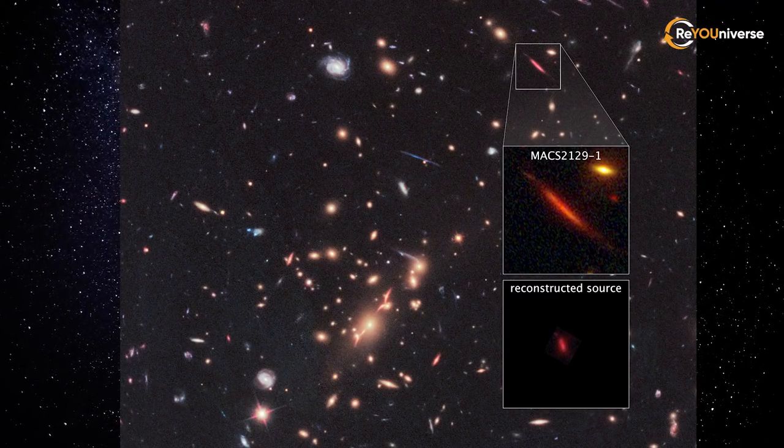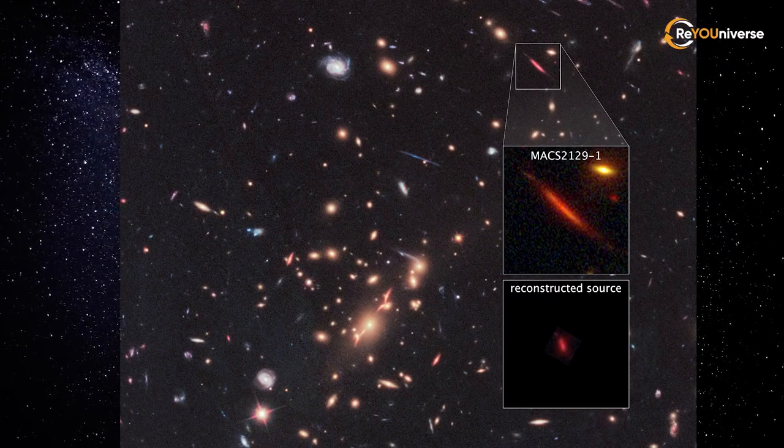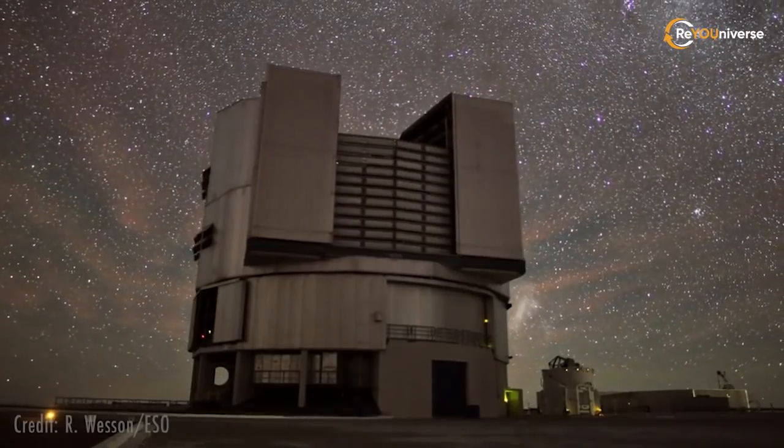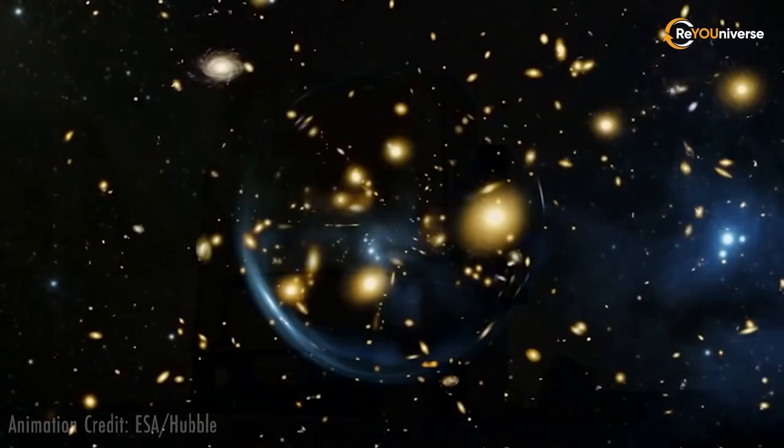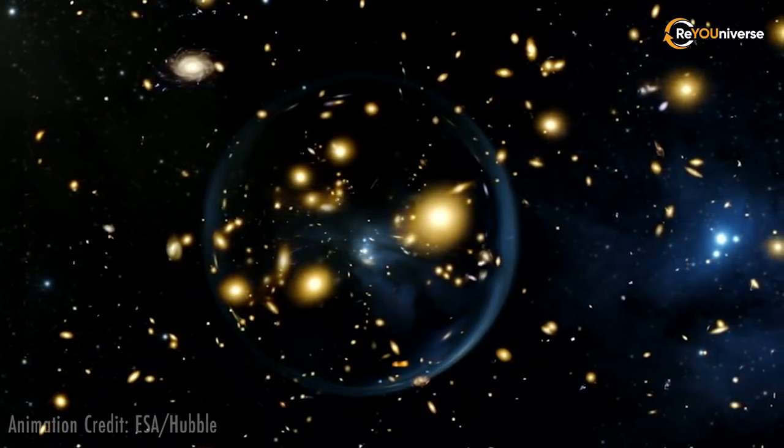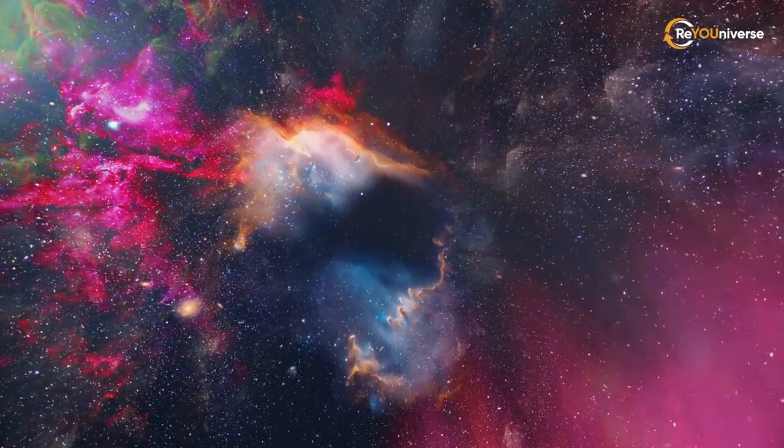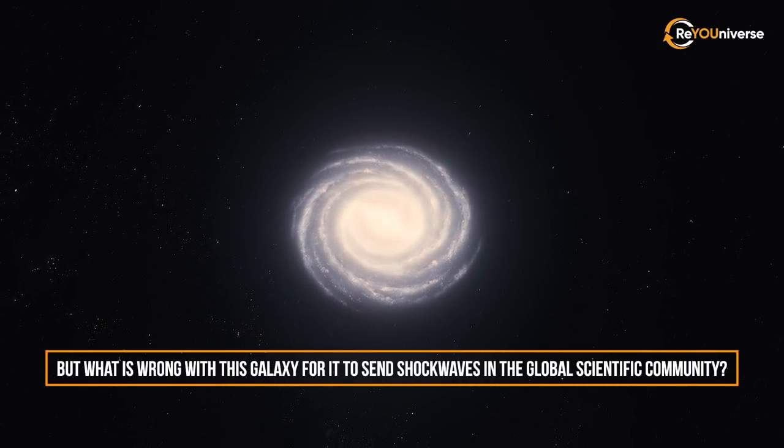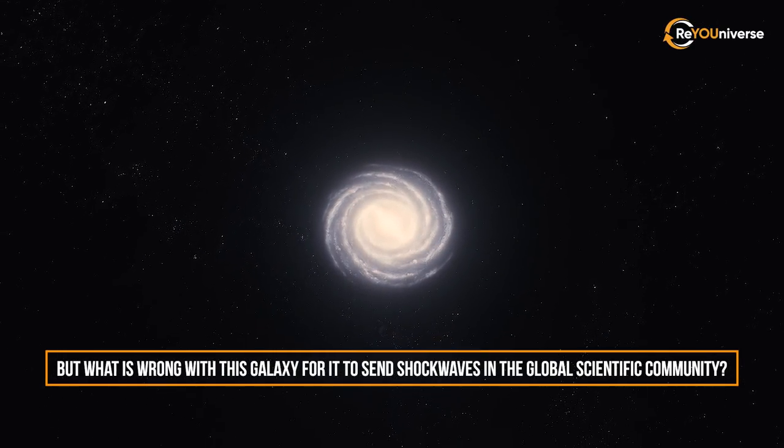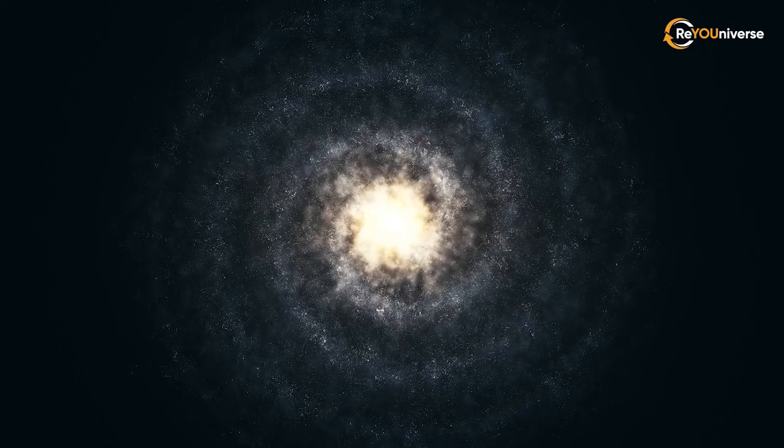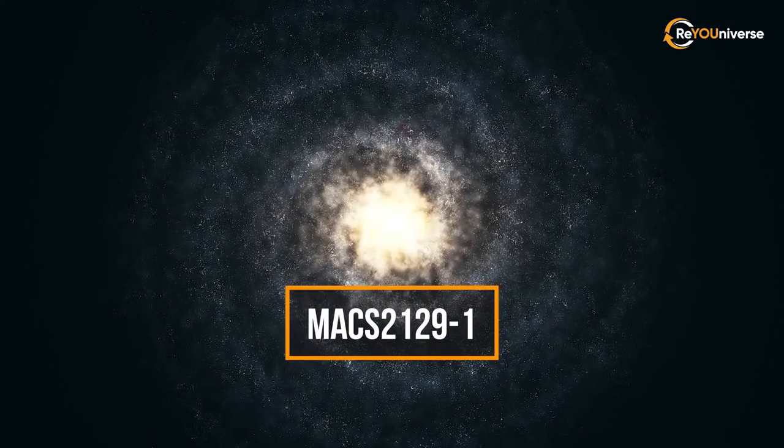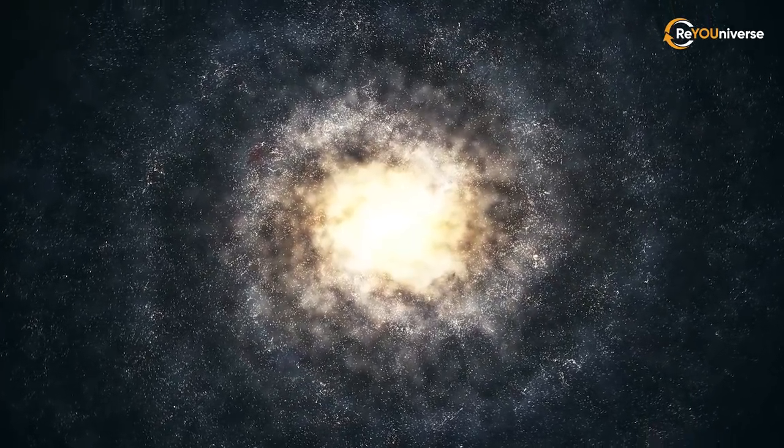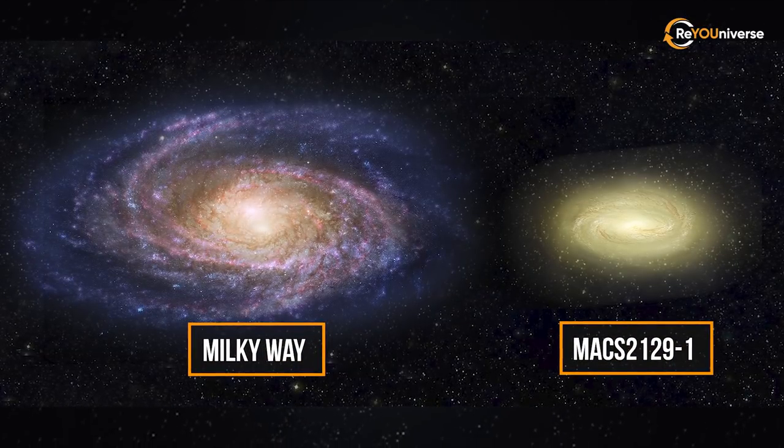The closest approximation of what MACS-2129-1 looks like is seen in the second highlighted square. This image was obtained by astronomers by using sophisticated software algorithms that removed the gravitational influence of the galaxy cluster. But what is wrong with this galaxy for it to send shockwaves in the global scientific community? The strangest thing here is MACS-2129-1's form. It looks like a typical flat spiral galaxy, which is similar to our Milky Way in many ways.